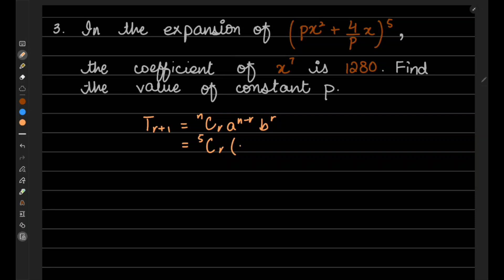a is px², and n minus r means 5 minus r, and what is b? b is 4/px to the power r.